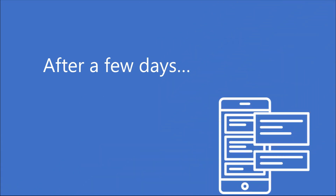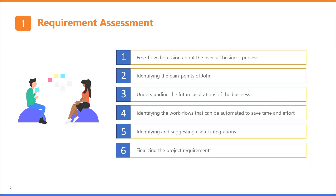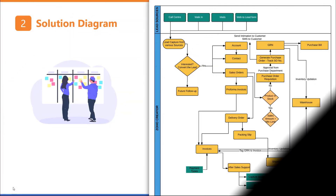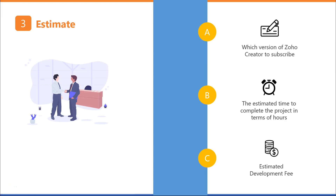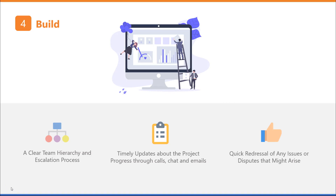After a few days, on a Sunday morning, I received an email from John. He wanted an estimate and a timeline to build a custom app on Zoho Creator for his business. We formed a core team internally to assess his requirements — discussing the overall business process, John's pain points, future aspirations, workflows to automate, useful integrations, and finalizing project requirements. We drew a solution diagram and walked John through every step to demonstrate how data would flow from one module to another. John loved it, suggested minor changes, and once the scope was agreed upon, we tabled a proposal with an estimate, timeline, and recommendation for the appropriate Zoho Creator plan.